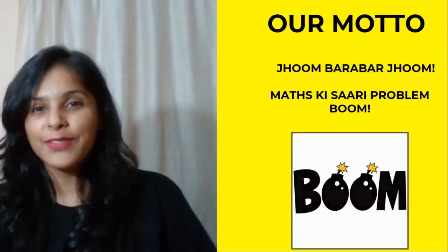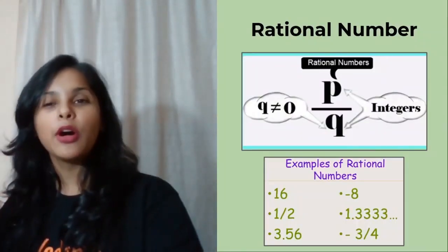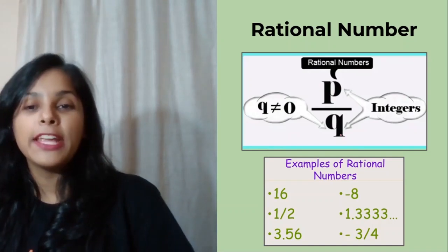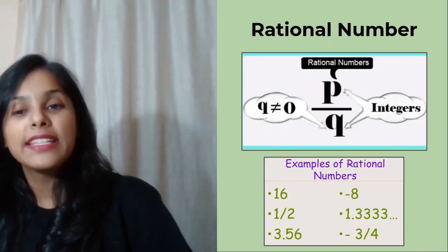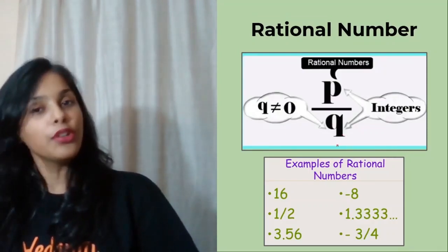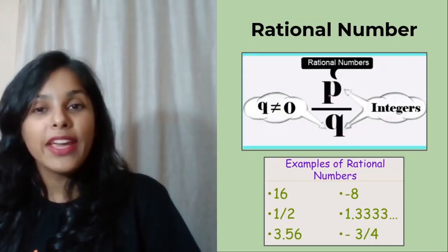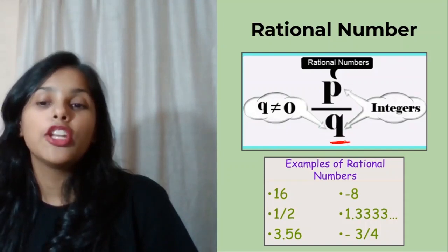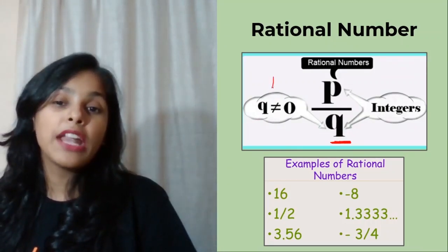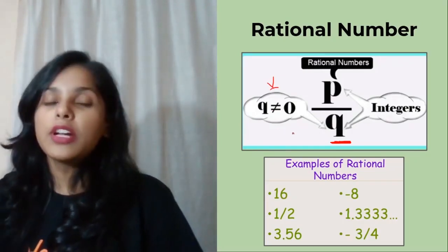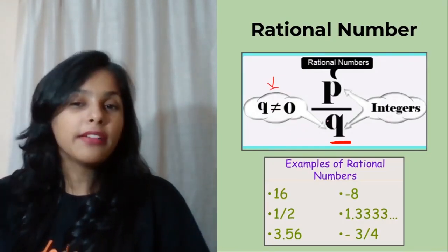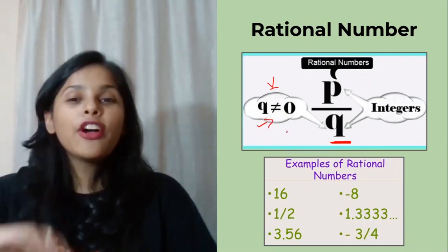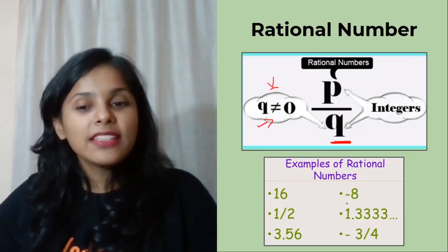Let's revise what rational numbers are. Rational numbers are those numbers which are in the form of p by q — meaning they are in a ratio of p to q — where p and q are always integers. The q in the denominator should never be equal to zero. So two conditions: one, p and q are integers; second, q should not be equal to zero.